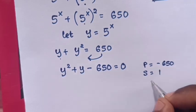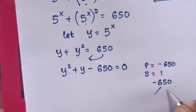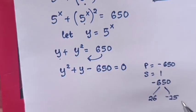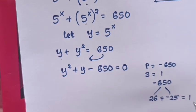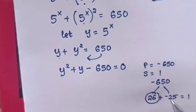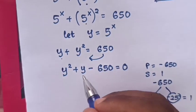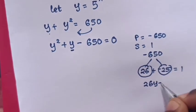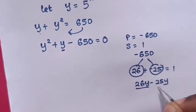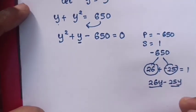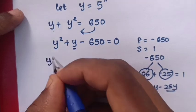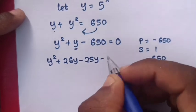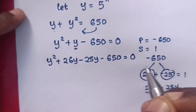To get -650 as a product of two factors: 26 and -25. When we add these two factors, we get 1. Therefore our factors are 26 and -25. To get y, it means 26y - 25y = y. So we substitute this into our equation: y² + 26y - 25y - 650 = 0.